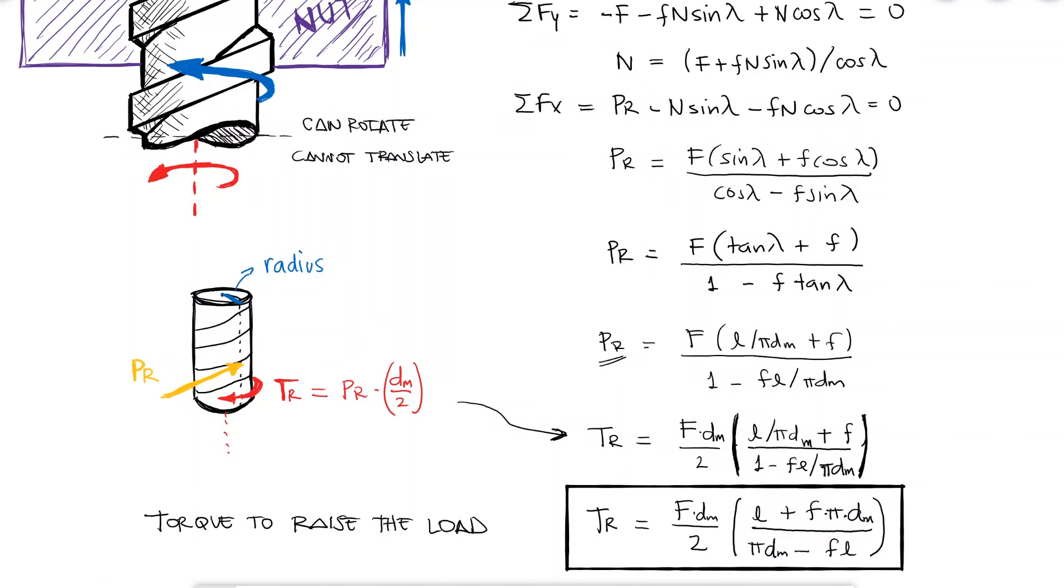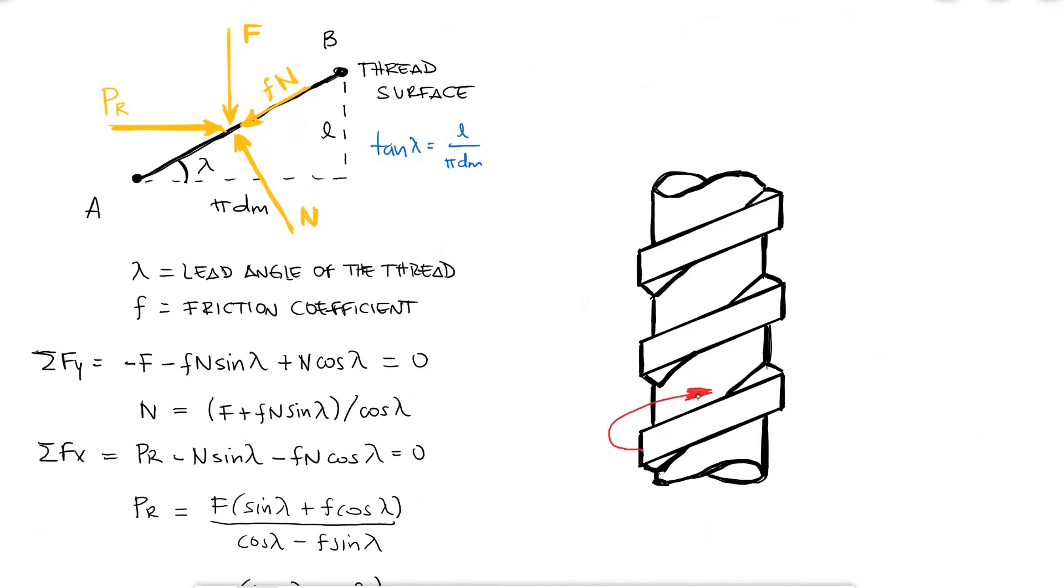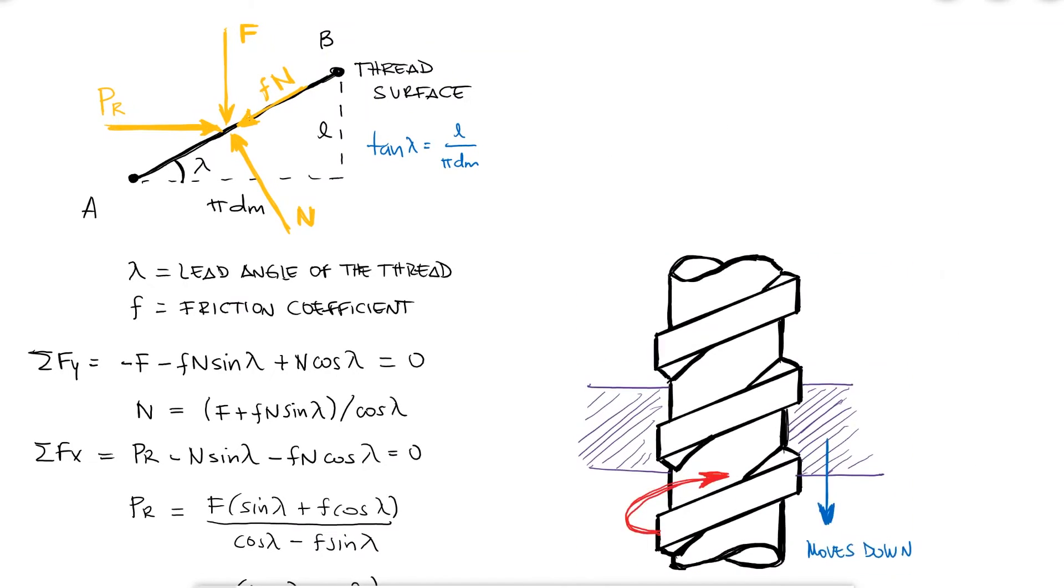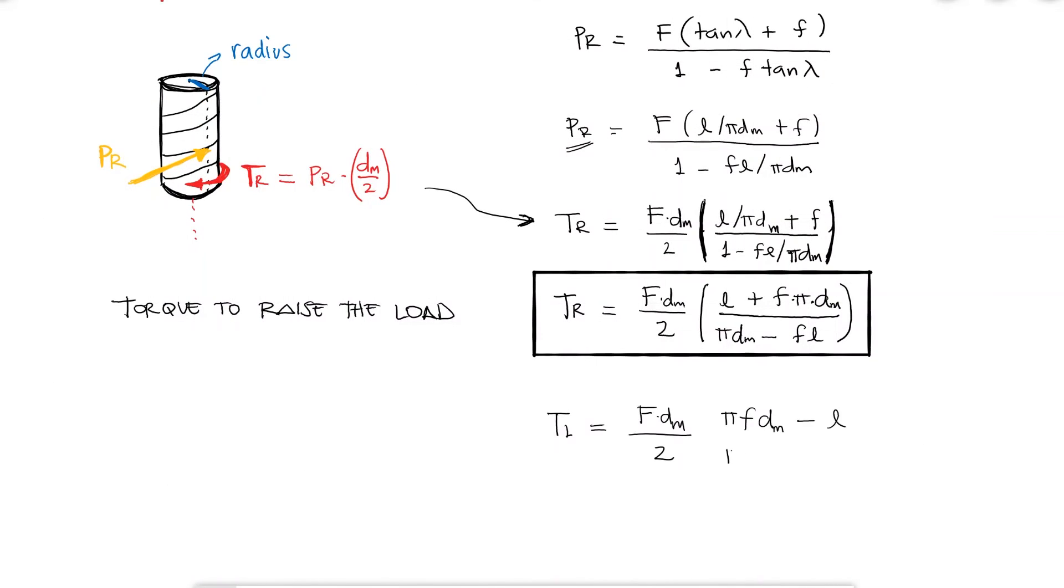When rotating the screw clockwise instead of counterclockwise, which means that the stage will go down and not up, and therefore the load will be lowered not raised, the free body diagram of the thread will have p r facing left, or in this case p l, l for lowering the load. The friction, again opposite to the sliding, would go in the opposite direction. This will result in a similar expression with different signs. This is the torque required to overcome a part of the friction in lowering the load.